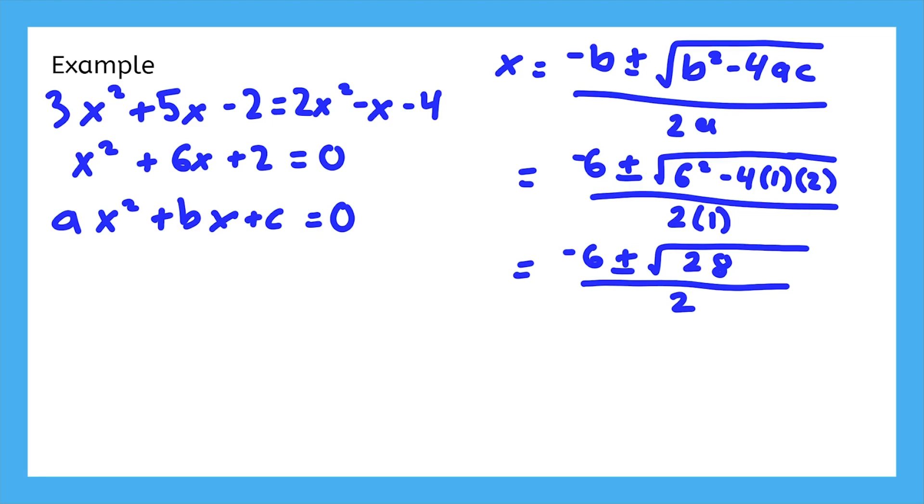It's been a while since we've learned how to simplify radicals, so let's review that real quick. We have to factor the radicand using a perfect square, and 28 is the perfect square 4 times 7. Now, we can pull out the square root of 4, which is 2.